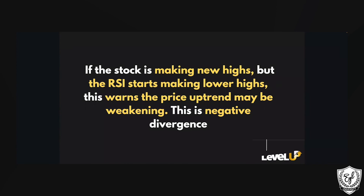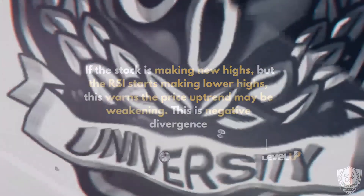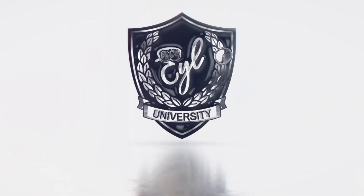Here is the summary. If the stock — and this could be stock, crypto, futures, forex — is making new highs, but the RSI starts to make lower highs, this warns that the price uptrend may be weakening. All it means is just exhaustion: price action and the indicator are not agreeing. Hence there is a negative divergence, and we may see a trend reversal — it could be up or down, but a trend reversal may happen.